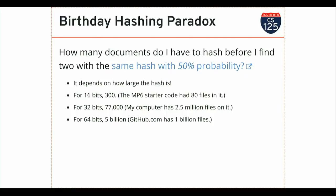Let's go bigger. At 64 bits I can actually hash 5 billion files before finding a collision with 50% probability. GitHub.com has one billion files — so that's okay, but I don't feel like it has a lot of headroom. At 128 bits — the size of the hash function used by Git — now I can hash a very large number of files before finding a collision.